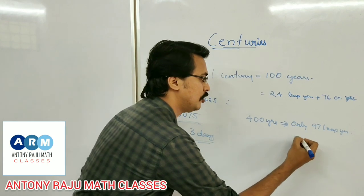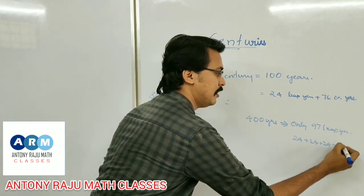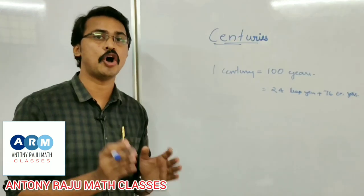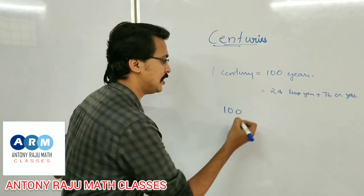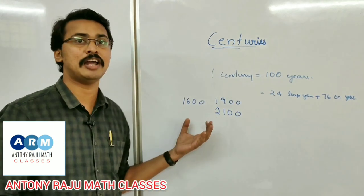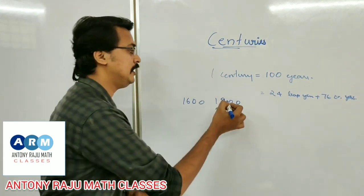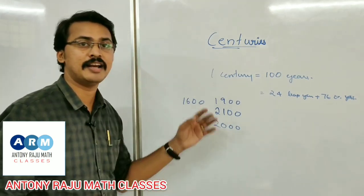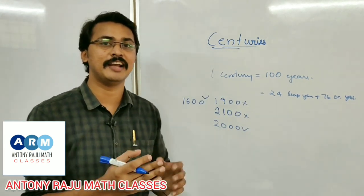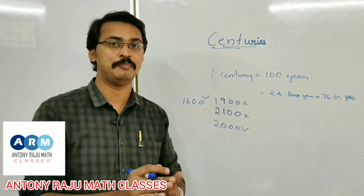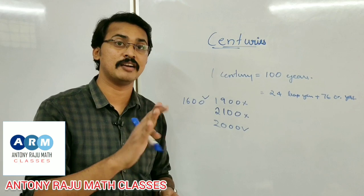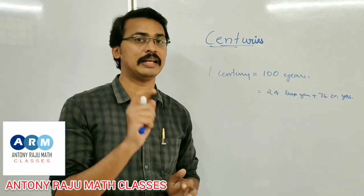97 leap years in 400 years — we split this as 24 plus 24 plus 24 plus 25. Now, for leap year rules: if a year is divisible by 4, it is a leap year. But for centuries, it must be divisible by 400.